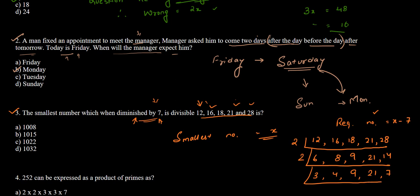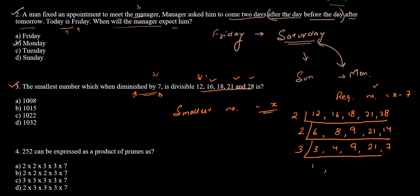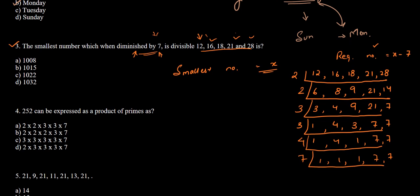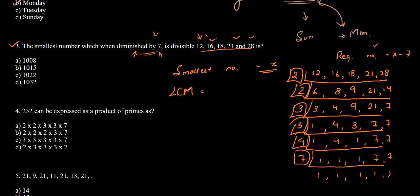Dividing by 3 gives: 1, 4, 3, 7, 7. Dividing again by 3 gives: 1, 4, 1, 7, 7. Dividing by 4 gives: 1, 1, 1, 7, 7. Dividing by 7 gives all 1s. The LCM is 2² × 3² × 4 × 7 = 1008.